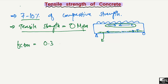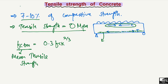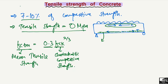The Eurocode provides a simple formula to find the tensile strength. The mean tensile strength fctm is equal to 0.3 multiplied by fck to the power of 2/3, where fck is the characteristic compressive strength of the concrete.